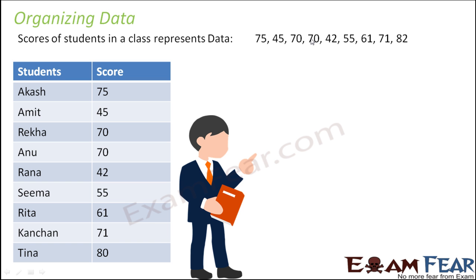So let us look at some better ways of organizing the same set of data. One way could be putting it into a tabular form — a table where you have a column with the names of students and another column with their respective scores. This is a better way because you can very specifically see which student scored how much. Also, earlier all the numbers were written with just a comma separating them, making it very difficult to read, but in a table you have one below another, so it can be read more distinctly and is more convenient.